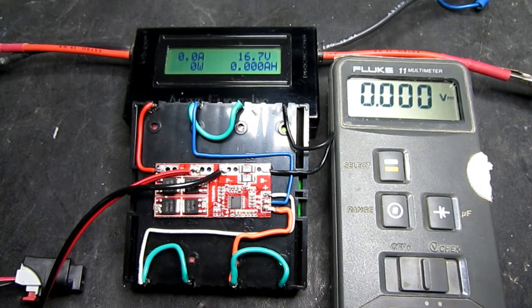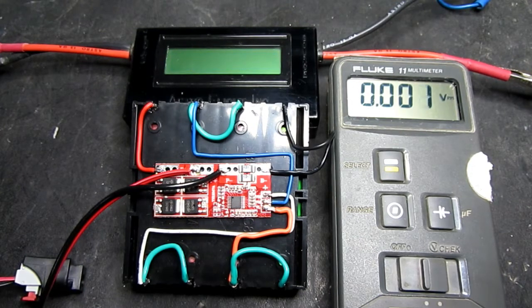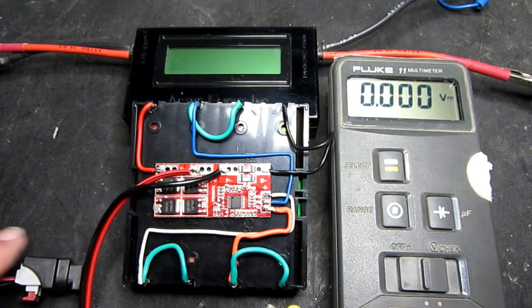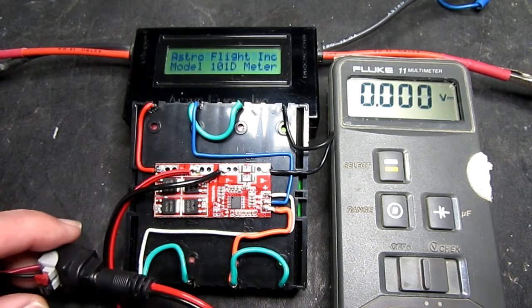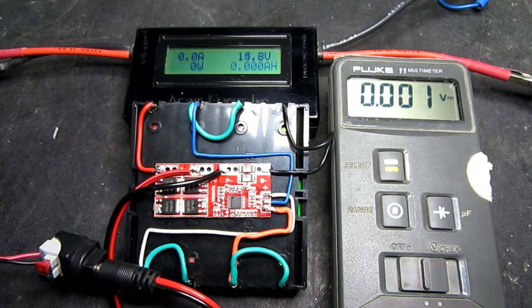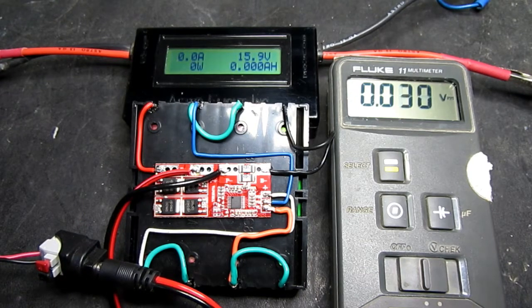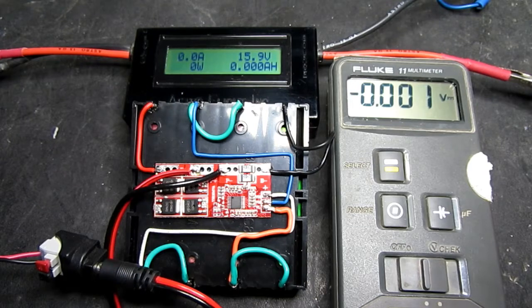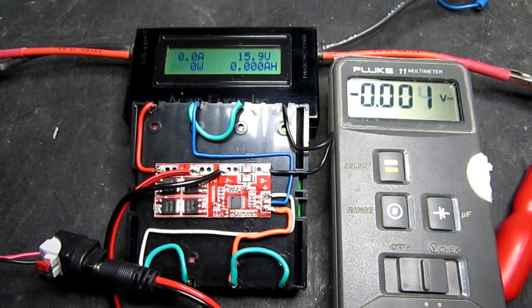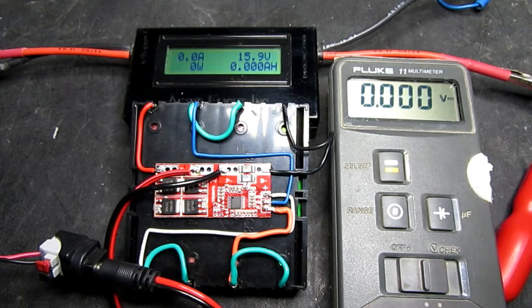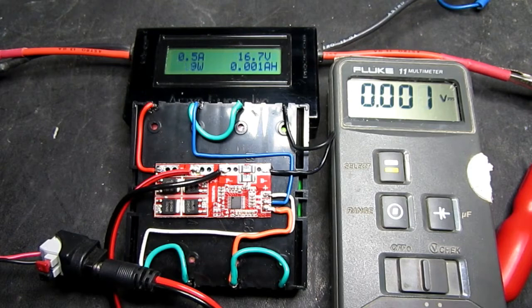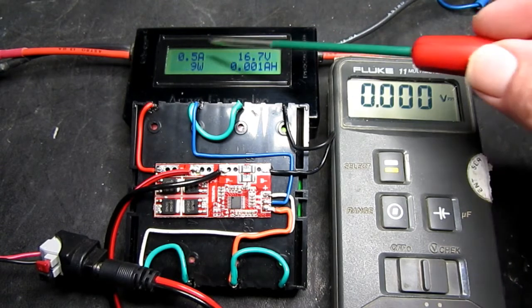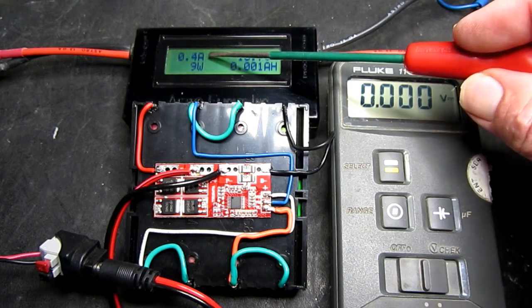I'll just power off the supply there and show you I connect up the load. You can see now our 15.9 volts from the cells. Now if I switch on the 16.8V, we can see that it is now charging at 0.5 amps, as shown on the display there.